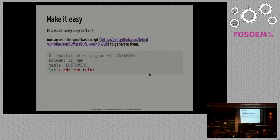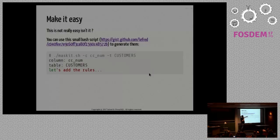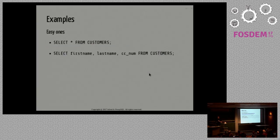If you want to create all these rules it's quite painful to remember them, so I made a small bash script. You call it with the column name you want to mask and optionally the table name you want to block select star from. It creates all the rules for you automatically.